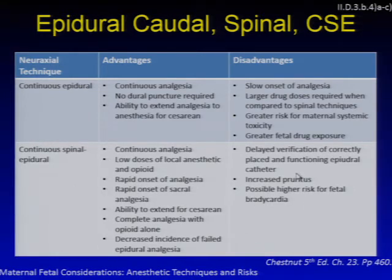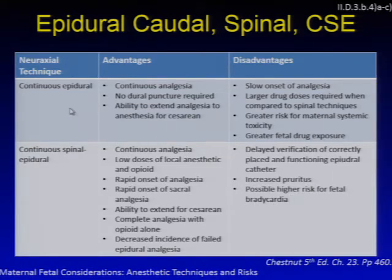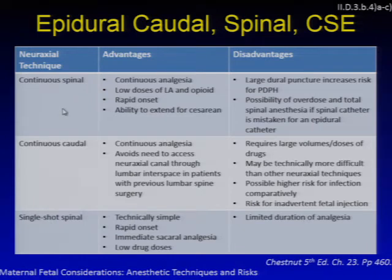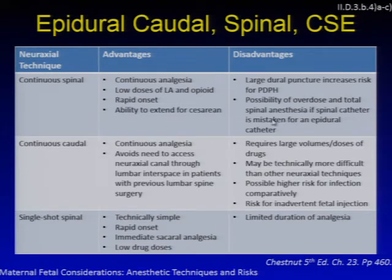CSE disadvantages include delayed verification of the epidural catheter, higher incidence of pruritus with high opioid spinal doses, and possibly higher association of fetal bradycardia — related to rapid analgesia and catecholamine withdrawal. Continuous spinals are very reliable with lower doses and fast onset, but require a large dural puncture increasing post-dural puncture headache risk, and carry possibilities of overdose and total spinal anesthesia if the catheter is inadvertently used as an epidural. Continuous caudal — rarely used today — can be useful in patients with previous lumbar spine surgery, but requires large drug volumes, can be technically difficult, carries higher infection risk, and risks inadvertent fetal injection. Single-shot spinals are fast and technically simple but have limited duration of analgesia.